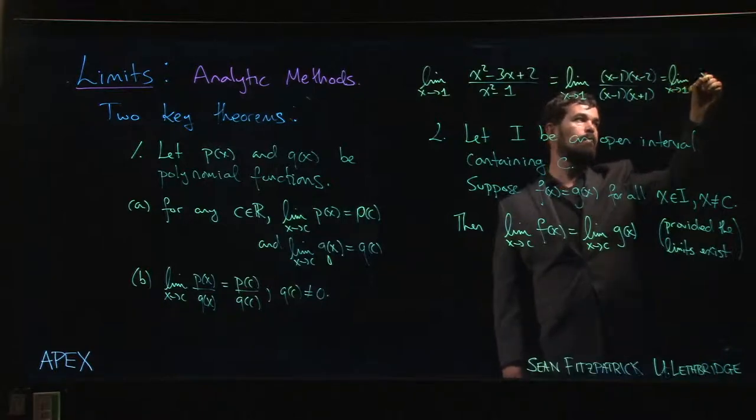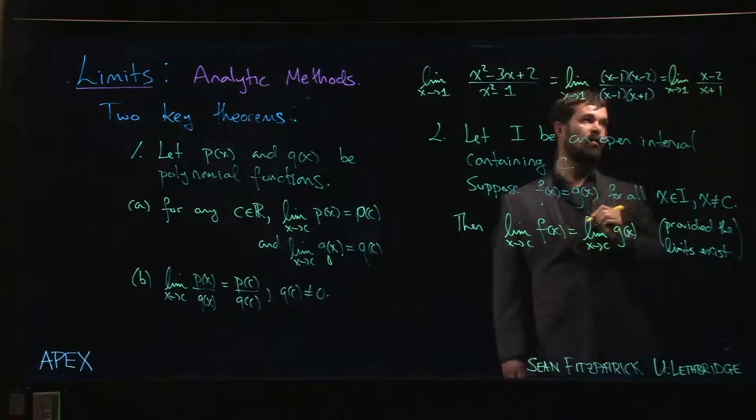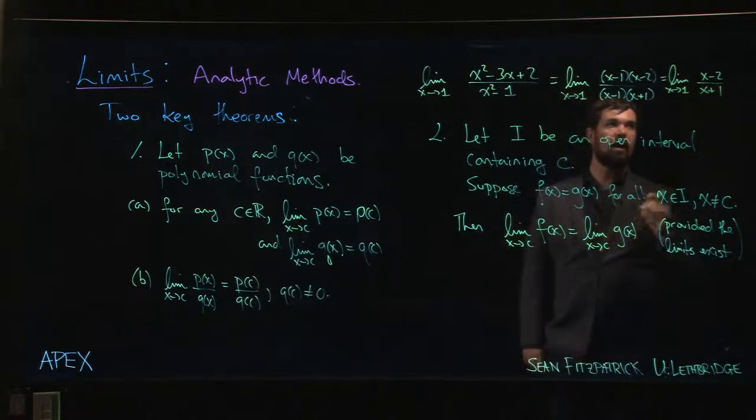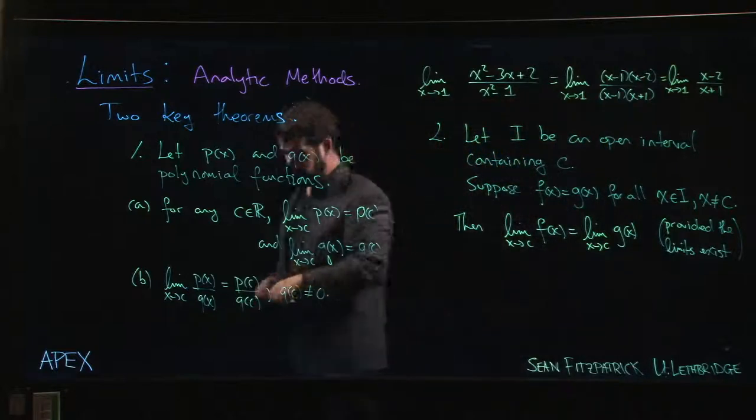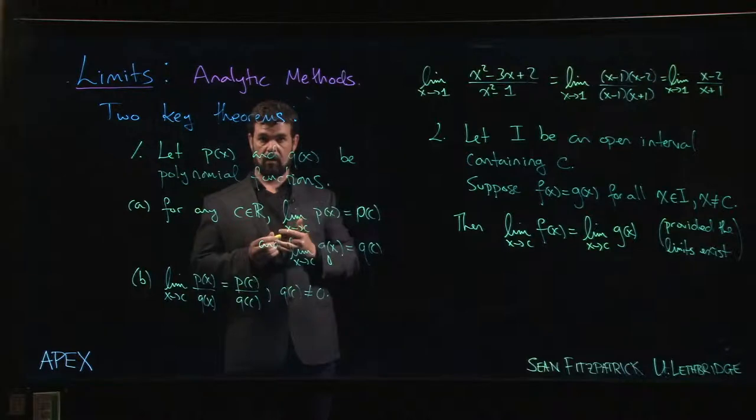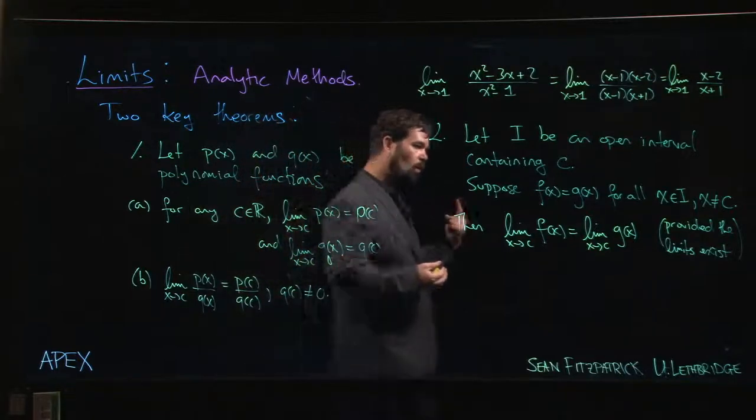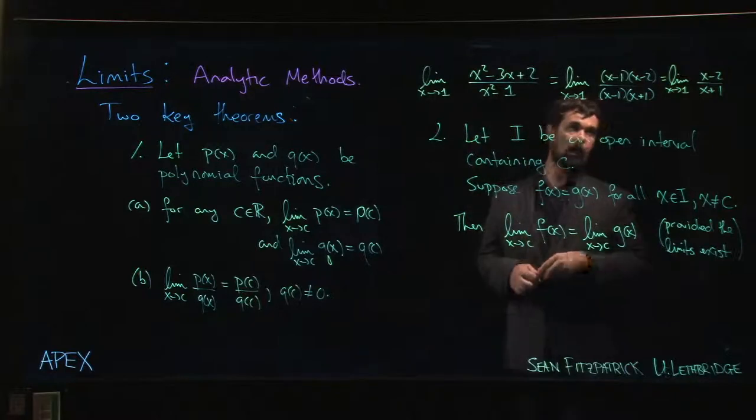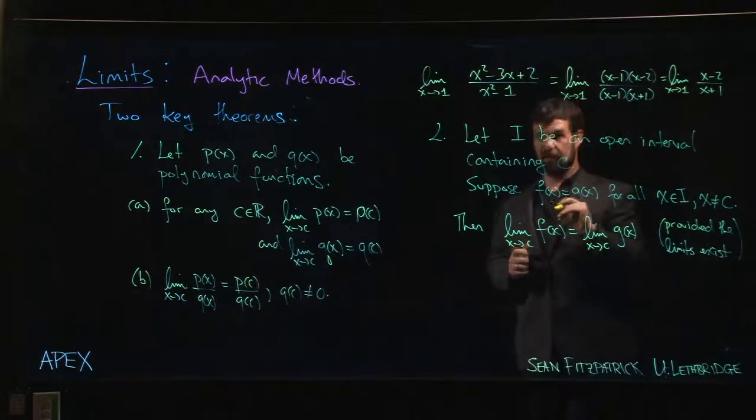So I can cancel those factors and write it like that. Now as a function, this function is not the same as the one that we started with because the one we started with was undefined at one and the function we ended with is defined at one, so they're different functions. But there's only one point where they disagree - they disagree at one. Everywhere else they have exactly the same values, and that means from this theorem that the limit of this function is the same as the limit of that function.